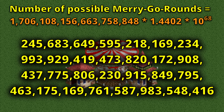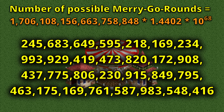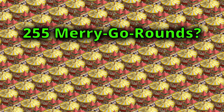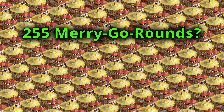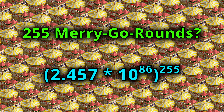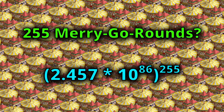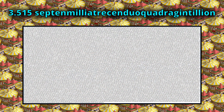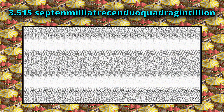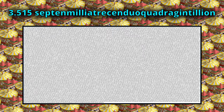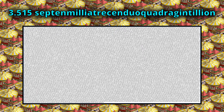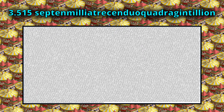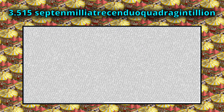That is a lot of possibilities. But what if we build not one but the maximum of 255 merry-go-rounds in a park? Well, then the total number of possibilities has 22,030 digits. It looks like this and is called 3.515 septem-millia-trecen-duo-quadrigintillion. We could keep going, but I think you get the idea — numbers be big.